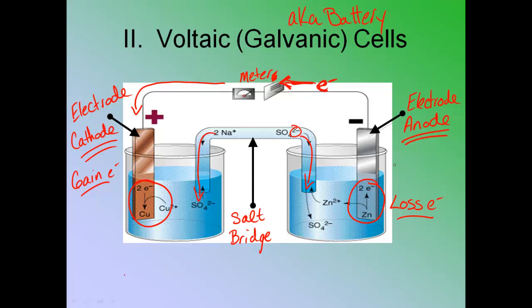So again, electrons are lost at the anode. They go up the wire through the meter or whatever you're doing to measure the electron movement, down to the cathode, which is gaining the electrons. And then some of those negative ions from the cathode side are going up into the salt bridge, over back to the anode side. And it's a continuous loop. And it just goes around and around and around and around. And that's the basic cell. And that's how a battery works.